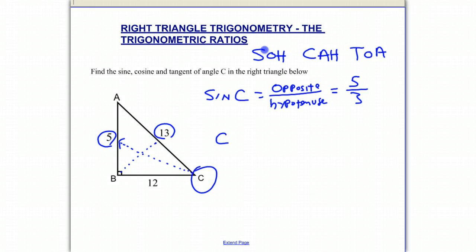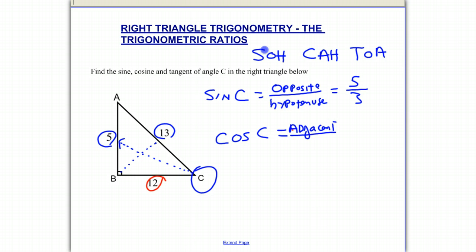If we find the cosine of C — remember that's C-A-H — cosine is adjacent over hypotenuse. Looking at the triangle, the adjacent side to angle C is 12. So the cosine of C equals the adjacent over the hypotenuse, which is 12 over 13.